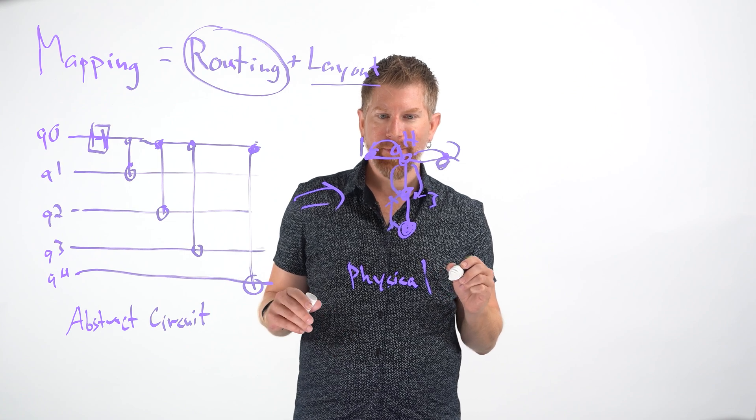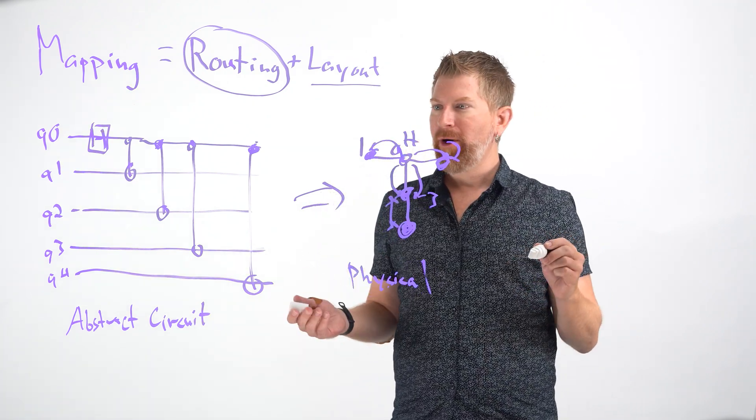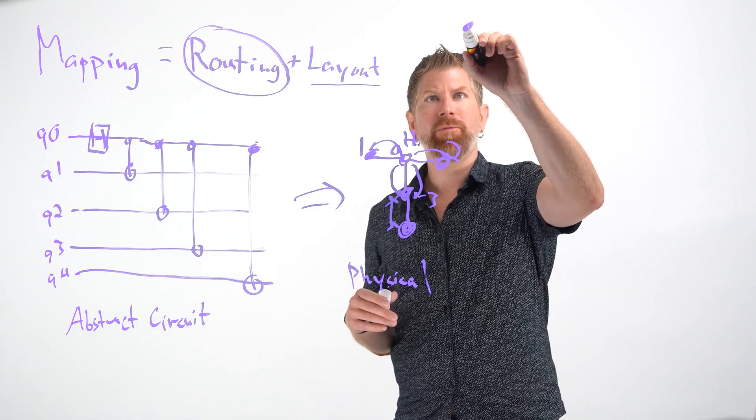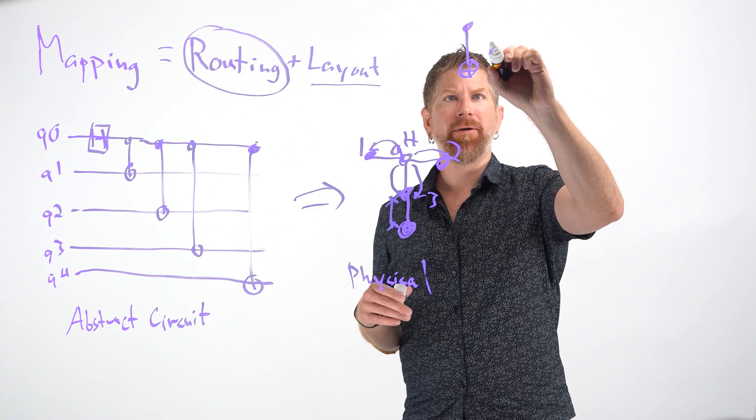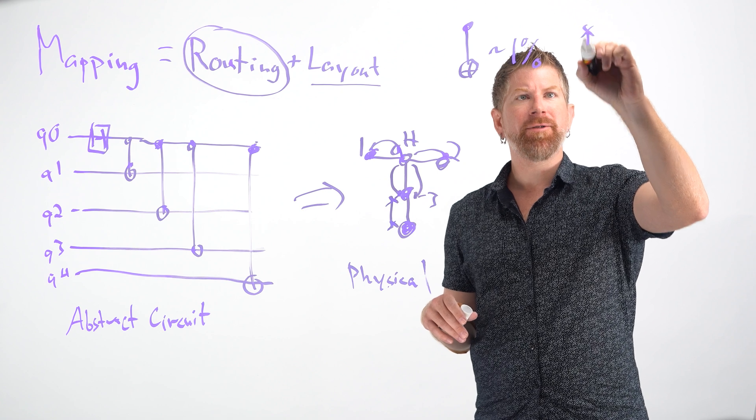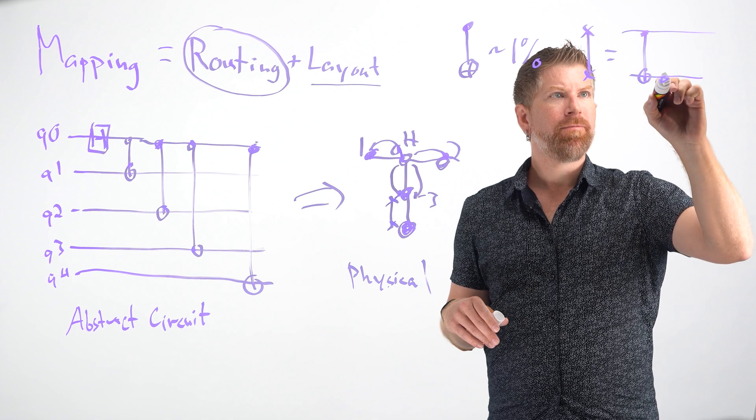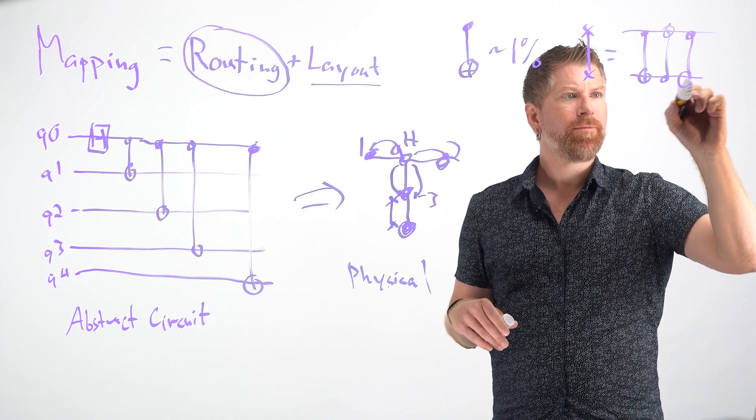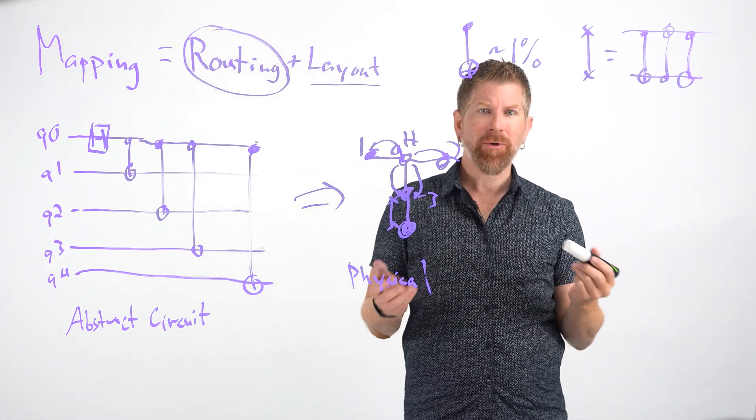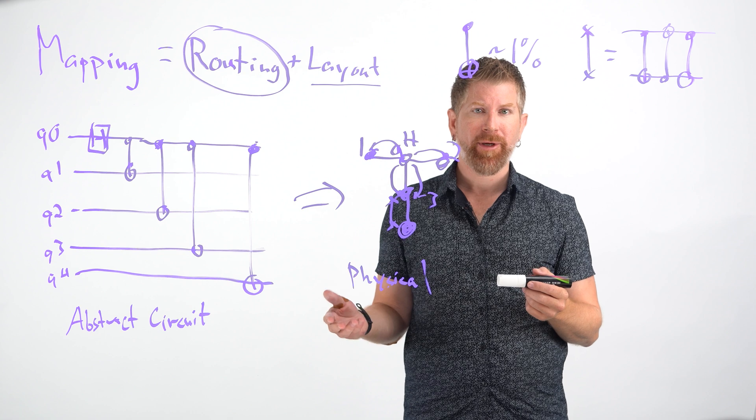Okay, so why is this important? You're just introducing extra gates. This should be fine. Well, right now, each one of these CNOTs contains about one percent error, ballpark range on physical hardware. And each one of these swaps is actually very expensive because it consists of three CNOTs. So in some sense, they're the most costly operation when it comes to error. Because we don't have error correction quite working on our quantum computers yet, this is something we need to be concerned about to produce the best results.